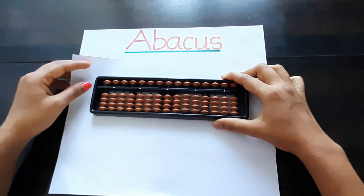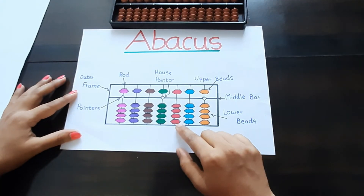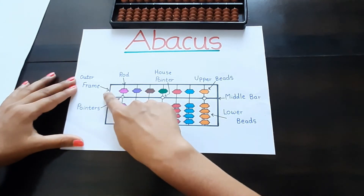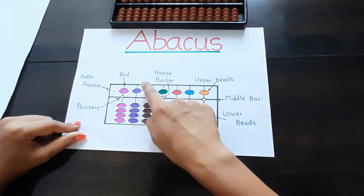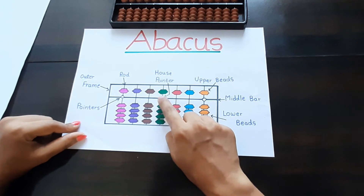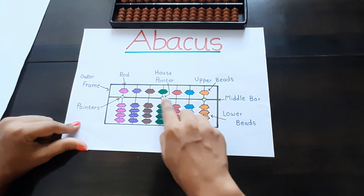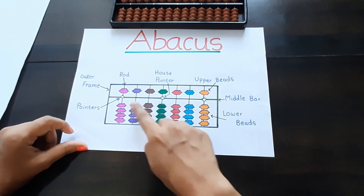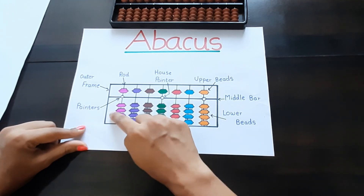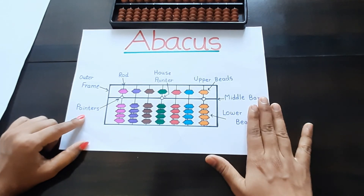Now we will see the labeled diagram of the abacus. This is the labeled diagram — as you can see, this is the outer frame, these are the vertical rods, the middle white point is the house pointer, these are the upper beads, this is the middle bar, these are the lower beads, and the remaining white points are called pointers. This is our abacus tool with names. Thank you.